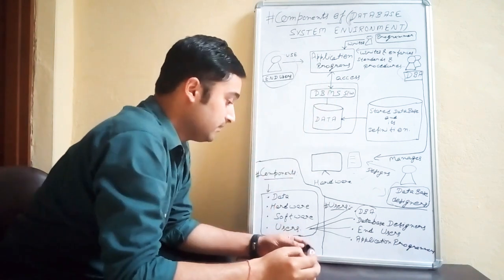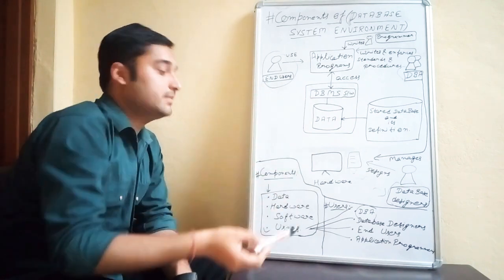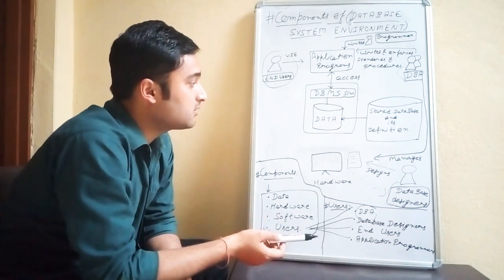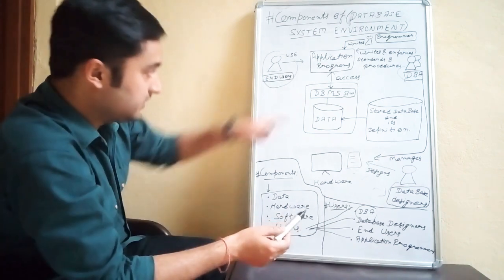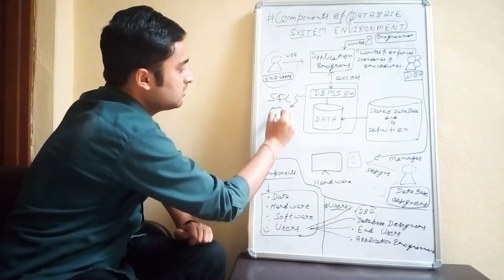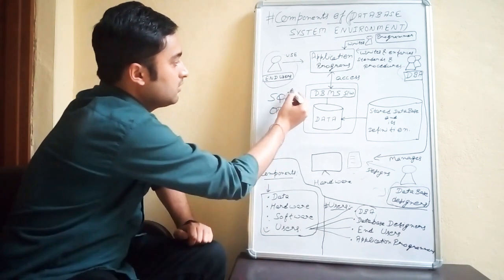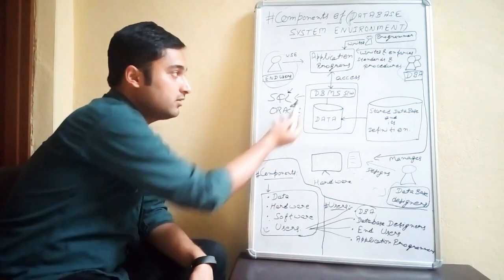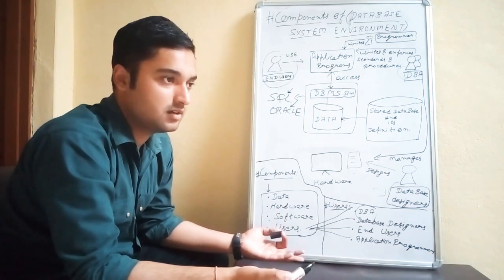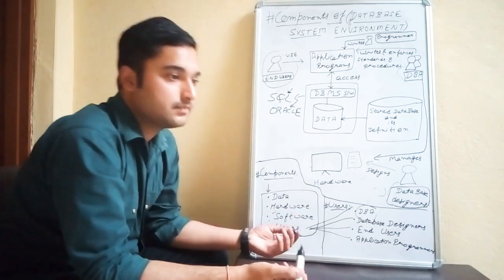The four users are: end user, DBA, database designer, and application programmer. Now the software component — the software deals with SQL or Oracle. In our syllabus we use only SQL, but Oracle or any other software which is used to make the database or make changes inside it also falls under this component.